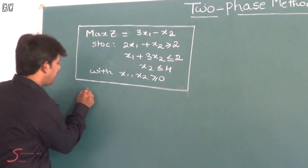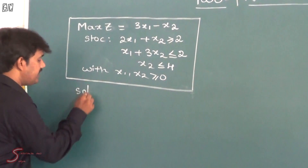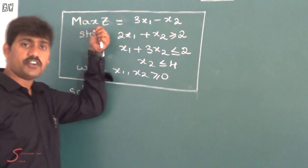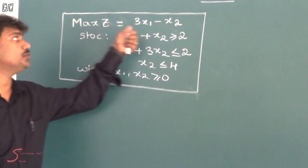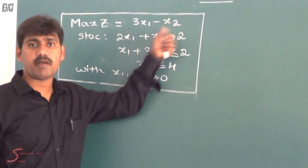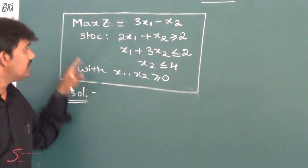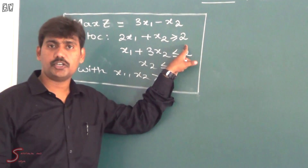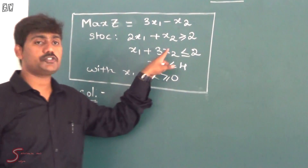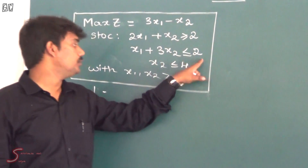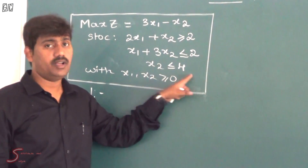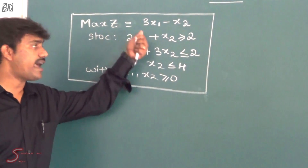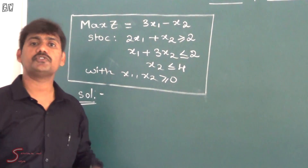The given problem is in the form of LPP, that is in the form of the objective function: maximize z equal to 3x1 minus x2, subject to constraints: 2x1 plus x2 equal to 2, x1 plus 3x2 less than or equal to 2, x2 less than or equal to 4, with non-negativity restrictions x1, x2 greater than or equal to 0.